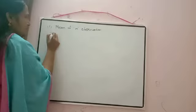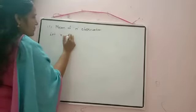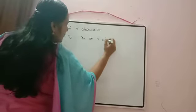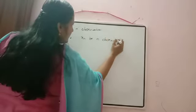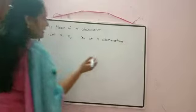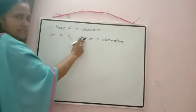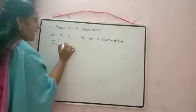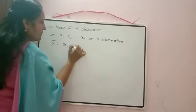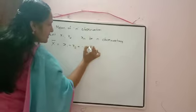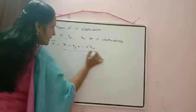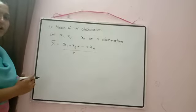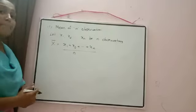Let x₁, x₂, ..., xₙ be n observations. How we are calculating the mean? Sum of all these numbers divided by total number. We denote it by x̄. So x̄ is equal to (x₁ + x₂ + ... + xₙ) / n — that is, sum of all the observations divided by total number of observations. This is the mean.